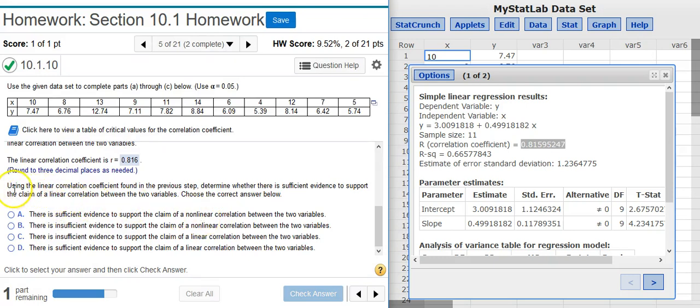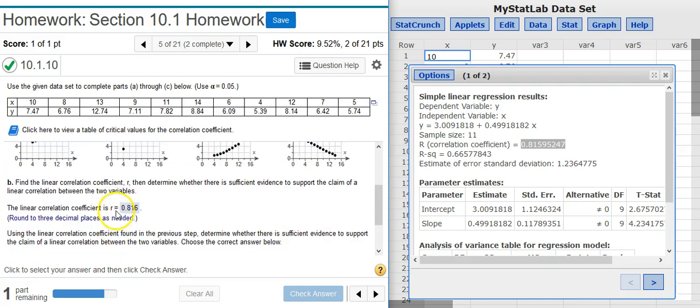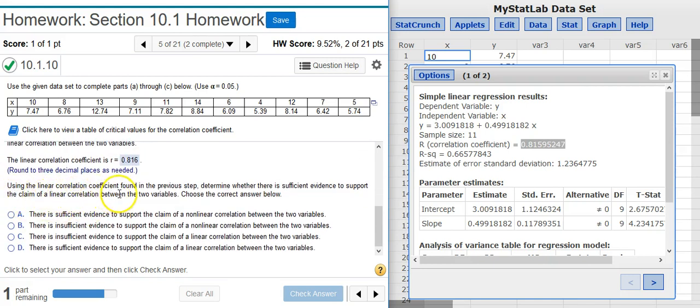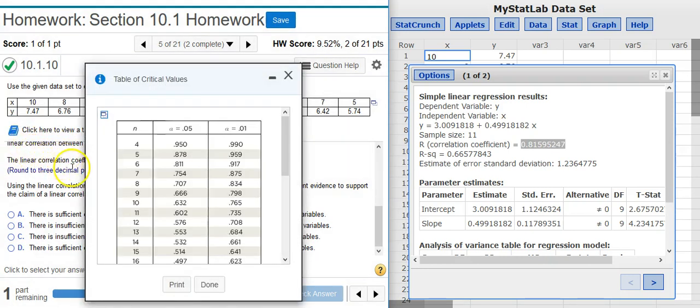Now this next part of Part B asks us to use the linear correlation coefficient to determine whether there is sufficient evidence to support the claim of linear correlation between the two variables. To do this we need to compare the R value we found from the problem statement with the critical R value. So I'm going to click on this icon to get my table of critical R values.